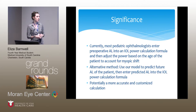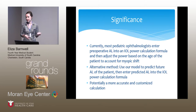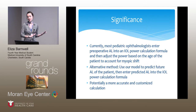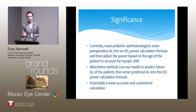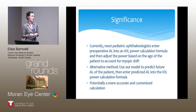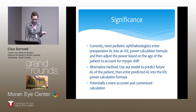One thing to note: keratometry is the less important part because it doesn't change that much after one year of age — you reach adult keratometry around age one. So predicting final axial length is the critical factor, not keratometry.